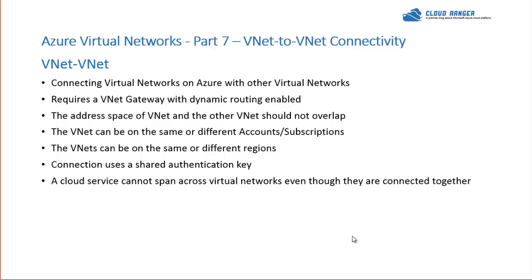VNet-to-VNet is not unrealistic at all — two organizations completely in the cloud might want to communicate with each other, and this is how you'd do it. If you're doing site-to-site from on-premises to cloud, you follow the same steps completely. These VNets can be on the same or different regions anywhere in the world, because you're creating a tunnel between them.